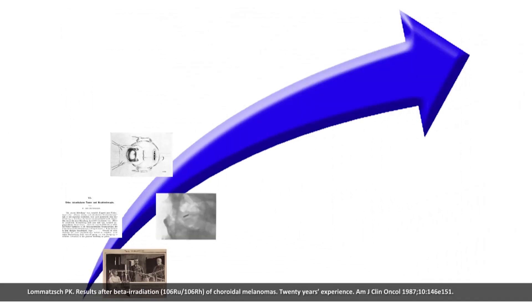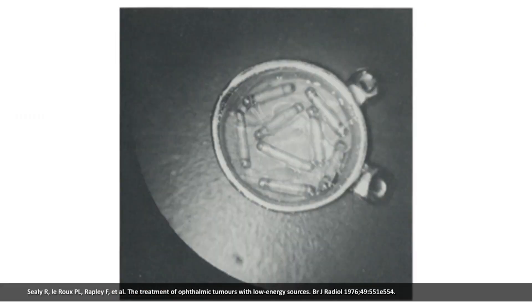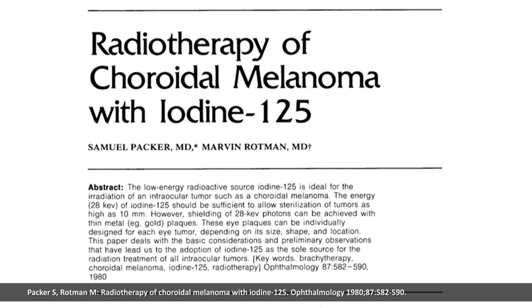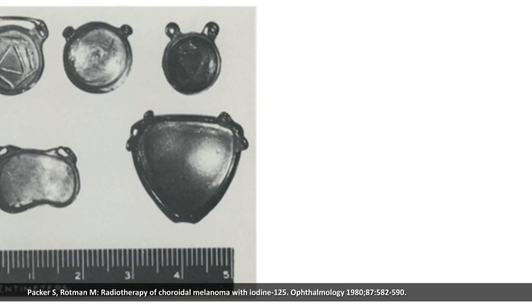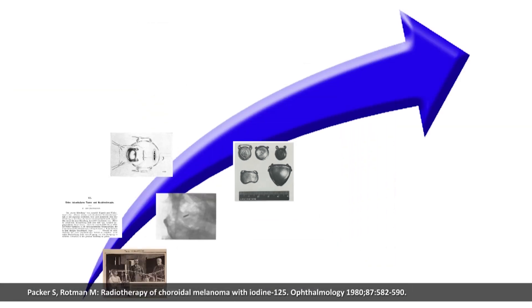In 1964 in Europe, Professor Peter Lamitch introduced the ruthenium applicators. Celie et al. first used iodine in 1976 to treat ophthalmic tumors, and the successful transition to iodine plaques was led by Rotman and Packer.